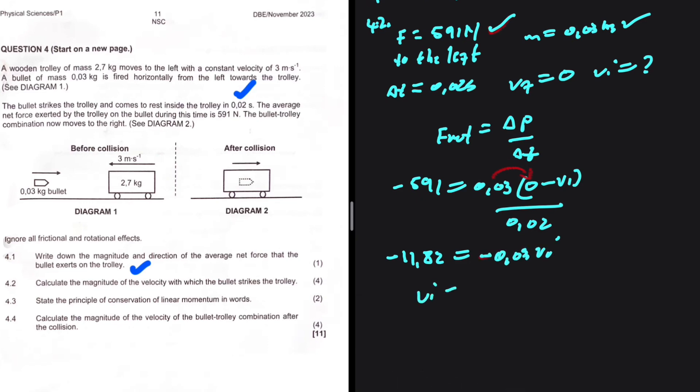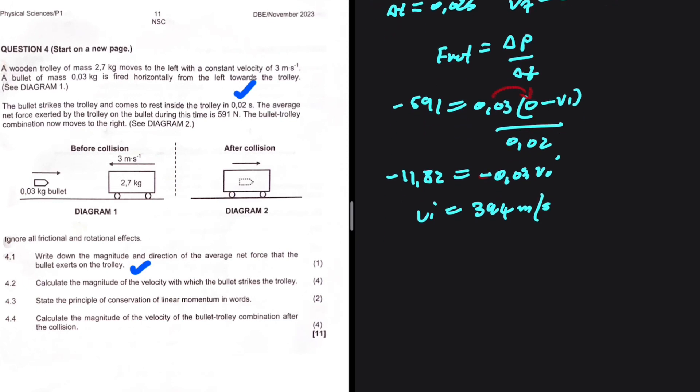Dividing both sides by –0.03 gives VI = 394 meters per second. This is a realistic speed for a bullet, so it makes sense.